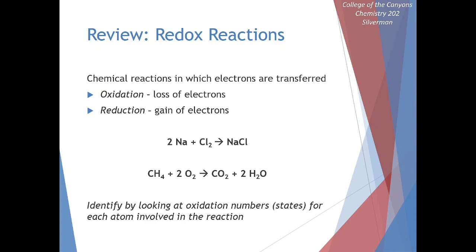Redox involves both an oxidation as well as a reduction. Oxidation is defined as losing electrons, whereas reduction is gaining electrons. Here's an example: we have sodium combined with chlorine to produce sodium chloride. Sodium is a neutral element to begin with. When it becomes part of sodium chloride, it has a positive 1 charge — it has been oxidized. Meanwhile, chlorine started off as a neutral element and now has a charge of minus 1 in the product side. Our chlorine atoms have gained electrons — they've been reduced.